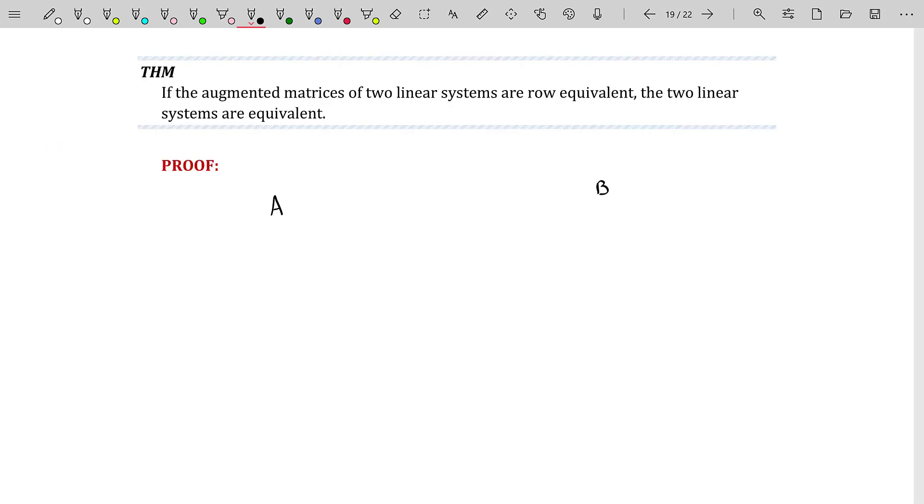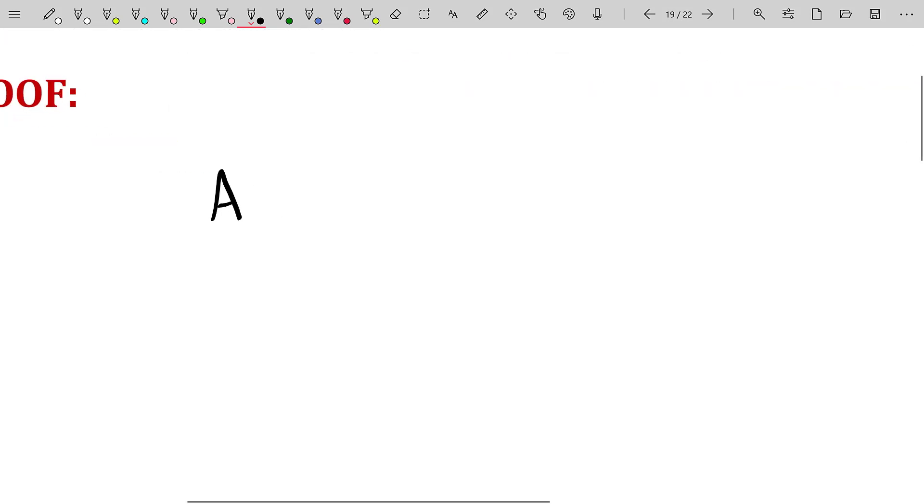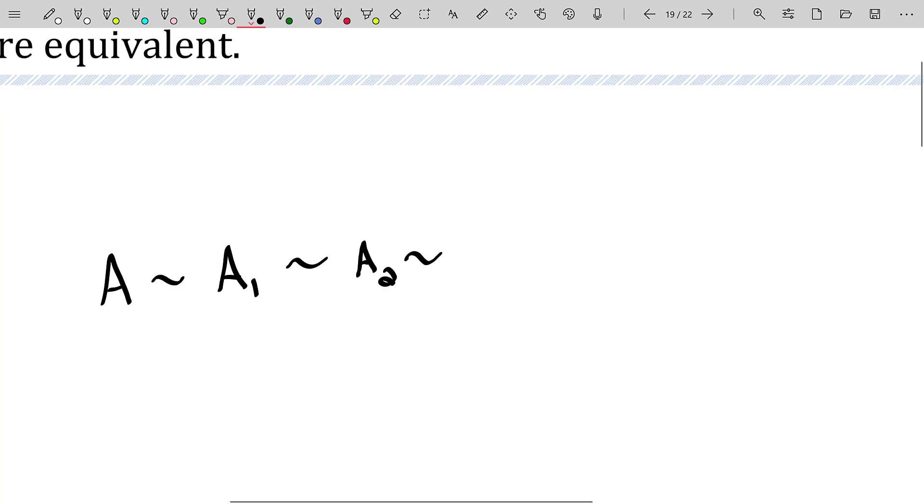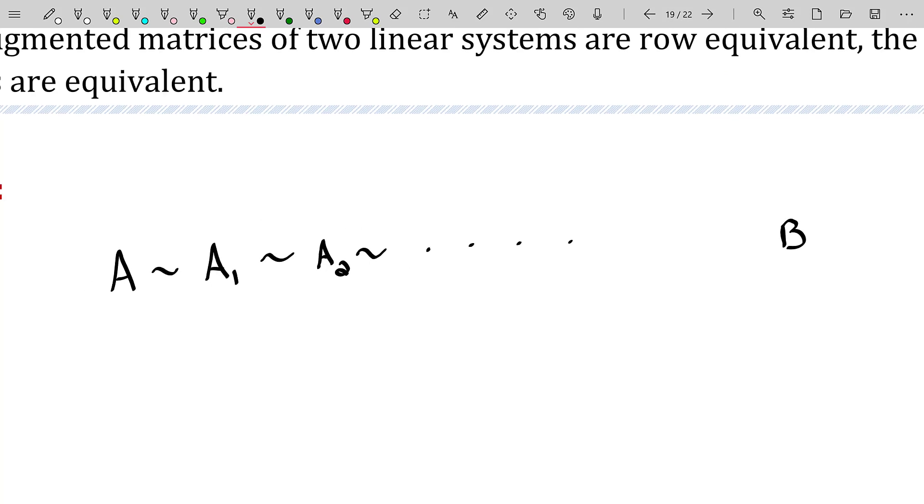Well, something to remember is when you perform elementary row operations, well, guess what? Solutions do not change to your underlying linear system. And that was a theorem we introduced a while ago that solutions are invariant under row operations. That is, I start with the matrix A, I perform a few row operations or a row operation, I get to A sub one, I perform another one, I get to A sub two and so on and so forth down the line. Eventually I will arrive at through a bunch of row operations, the matrix B. And through that process, the solution to the underlying linear system should never change because again, elementary row operations never change solutions.